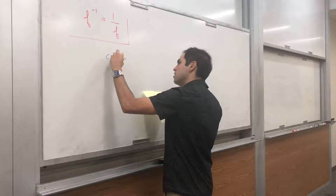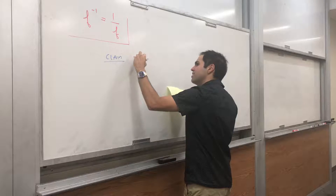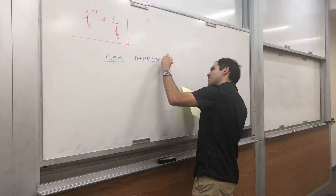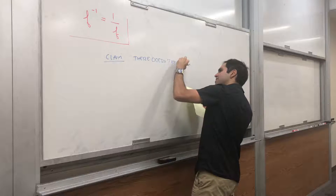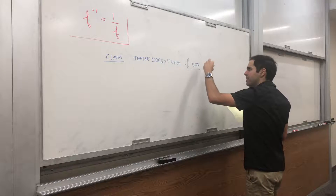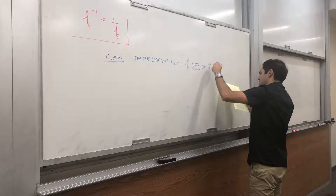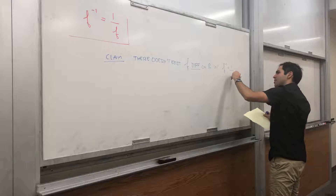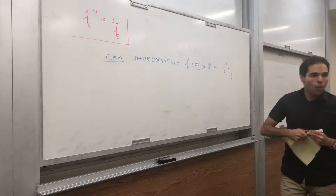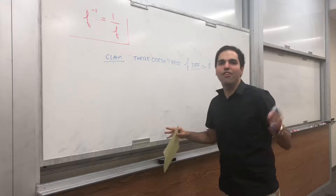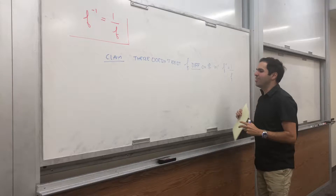Claim: there does not exist f differentiable, at least on ℝ, with f inverse equals 1 over f. It's very similar to the video I've done on f of f of f of x equals x.